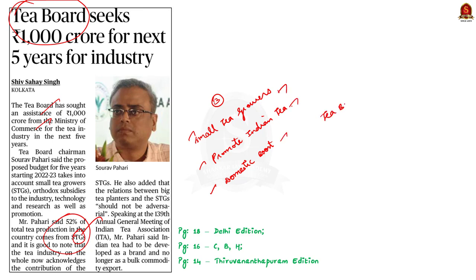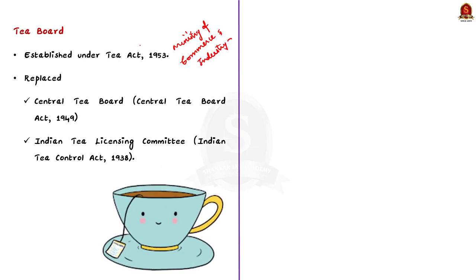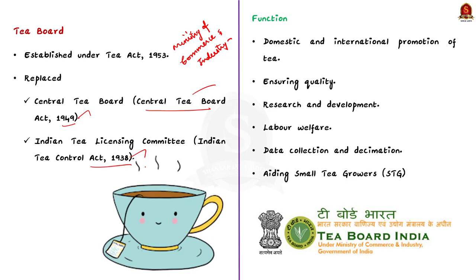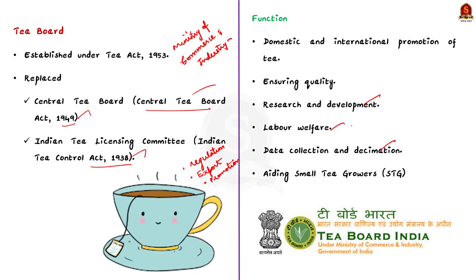Tea Board is a statutory body under the Ministry of Commerce and Industry. It was established in 1954 under the Tea Act 1953. Before the Tea Board, there was the Central Tea Board under the Central Tea Board Act 1949 and the Indian Tea Licensing Committee under the Indian Tea Control Act 1938. In 1954, the Tea Board replaced both these bodies. Currently, the Tea Board focuses on promotion of tea inside and outside the country, improvement of tea production quality through R&D, promoting welfare schemes for plantation workers, collecting and publishing data regarding tea, and assisting small tea growers.